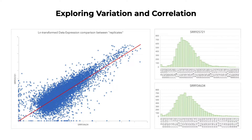Here you can see a distribution in a histogram for two samples, and then those two samples plotted against each other using a scatter plot. Now we can compare these samples and find genes that are highly correlated and those that are not. We see that the bulk of our data is correlated, and so our assumption about these samples belonging to the same group are correct. These visuals are especially important when we do not have control over experimental design and use data generated by someone else, either from a single lab or multiple labs.